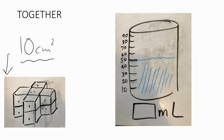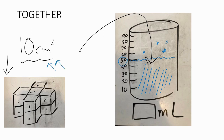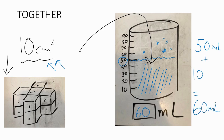If we take this 10 centimetre cubed object and drop it in — kerplunk — what's the water level going to go up to? It's already on 50 millilitres, but we've dropped 10 centimetres cubed in here. It's going to be 50 plus 10. The new water level is going to be 60 millilitres, because that shape is going to be in there and take up the space of the water, making the whole thing raise up another 10 millilitres.